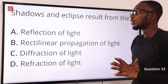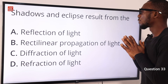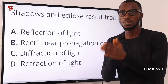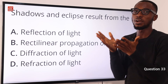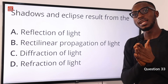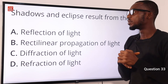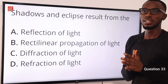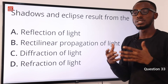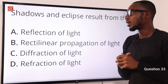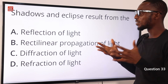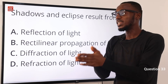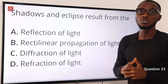Question 33. Shadows and eclipses result from what? This results from the direct linear propagation of light — that is, light travels in a straight line. When light cannot pass through an object, it casts a shadow. The closer the light, the smaller the shadow formed. Eclipses can be partial or total, occurring when the moon is positioned where the earth's shadow falls. All of these are evidences of direct linear propagation of light. Option B is correct.